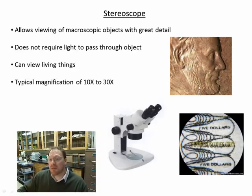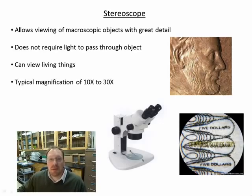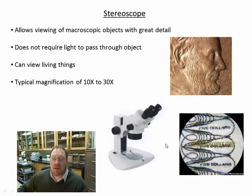As an example of what you'd use a stereoscope for: you could look at the surface of a penny and actually see the details of Lincoln's beard, whereas with the naked eye you wouldn't notice it. On the United States five-dollar bill there are small printed words reading 'five dollars,' which is one of the ways the U.S. Mint ensures that the currency in circulation is authentic.